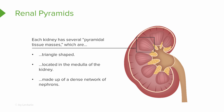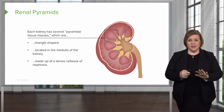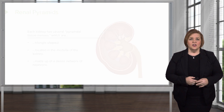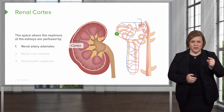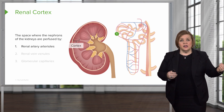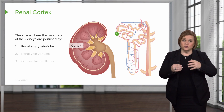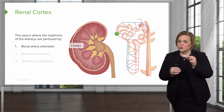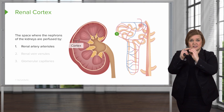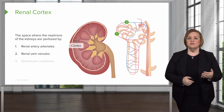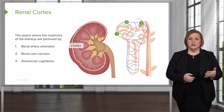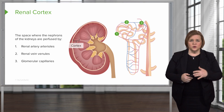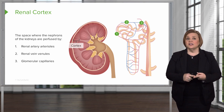We introduced you to the nephron in the previous slide. In the cortex, you also have nephrons of the kidney, and they're perfused by the renal artery arterioles — smaller branches of the renal artery. We have the same thing with the renal vein venules. The numbers shown on the nephron give you a frame of reference. You also have the glomerular capillaries. So in the renal cortex, the nephrons are perfused by the renal artery arterioles, the renal vein venules, and the glomerular capillaries.